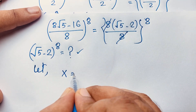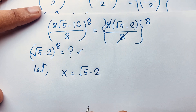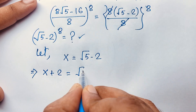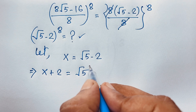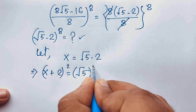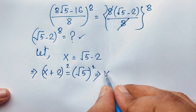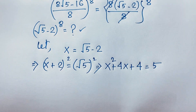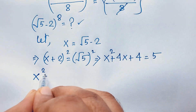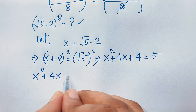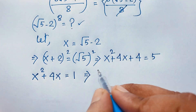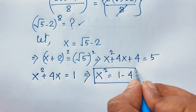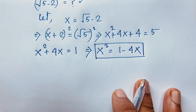Let x = √5 − 2. Moving −2 to the other side: x + 2 = √5. Now squaring both sides using (a + b)² = a² + 2ab + b²: x² + 4x + 4 = 5, so x² + 4x − 1 = 0, giving us x² = 1 − 4x. This is our first equation.